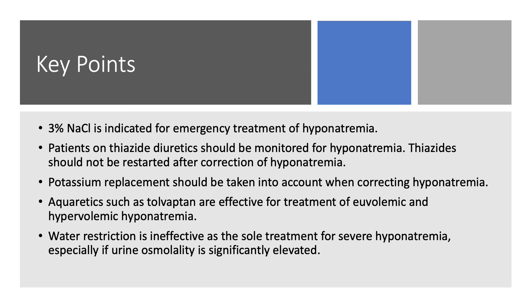Aquaretics such as tolvaptan are very effective for treatment of SIADH for euvolemic hyponatremia and, in many cases, hypervolemic hyponatremia such as congestive heart failure. Water restriction is ineffective as the sole treatment for severe hyponatremia, especially if urine osmolality is over 500 or if the sum of urine sodium and potassium exceeds serum sodium. Thank you very much. This concludes this chapter — it's the longest chapter — and next time we're going to talk about potassium.